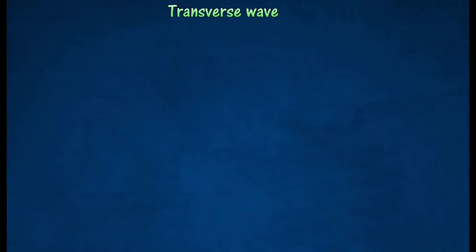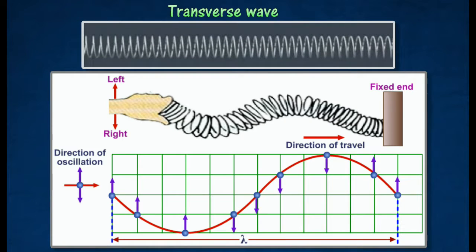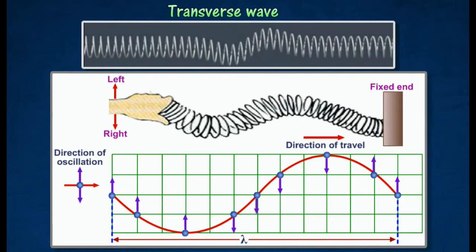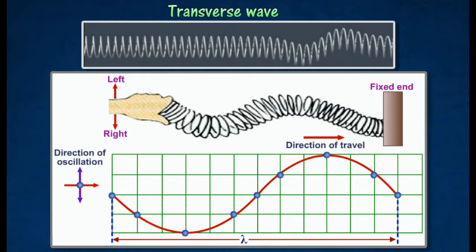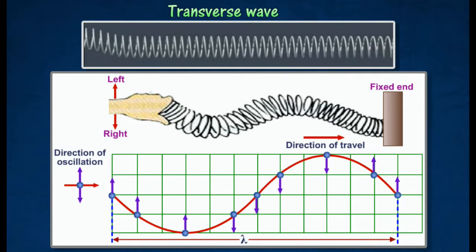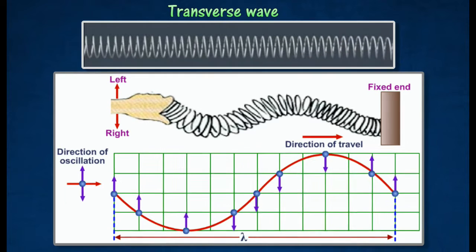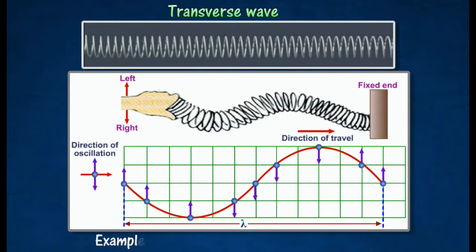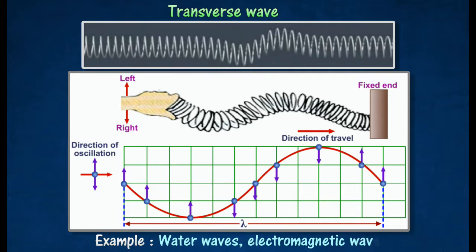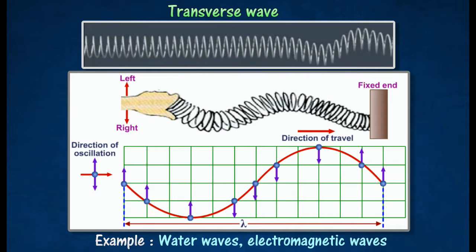The diagram shows a set of transverse waves produced by vibrating the spring at right angles with it. A transverse wave is a wave in which the particles of the medium move in the direction perpendicular to the direction in which the wave moves. Examples of transverse waves are water waves and electromagnetic waves.